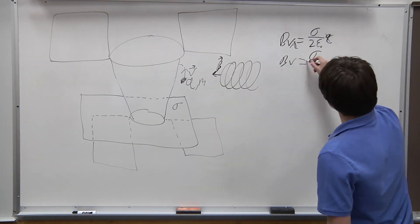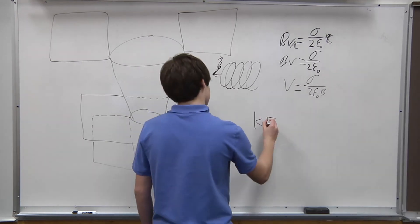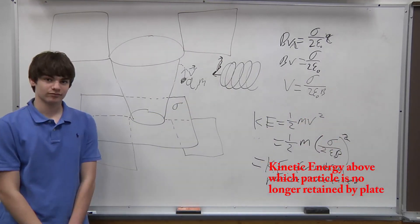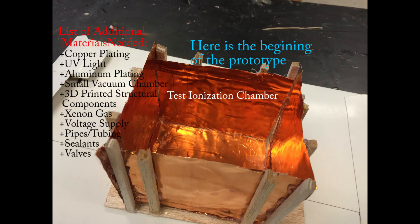The combination of the solenoids and the plate will cause there to be an energy for which the electric field of the charge plate will no longer hold the ions in the engine. Thus, this system will ensure that the ion is released with the proper energy.